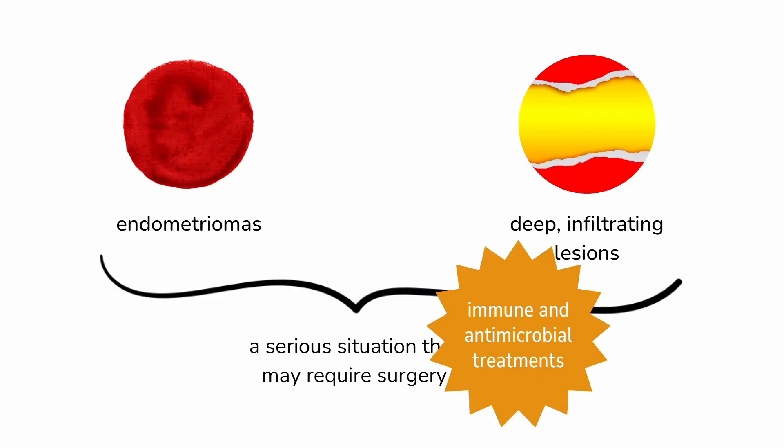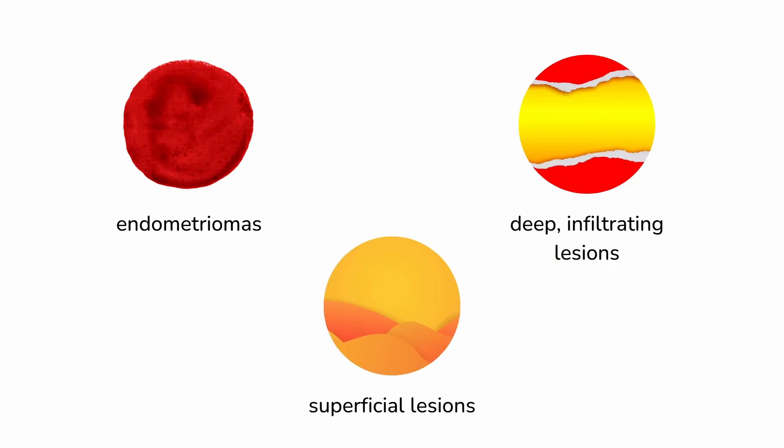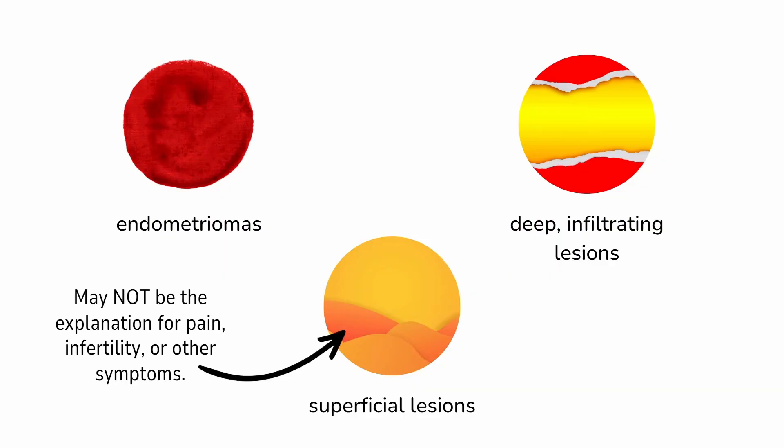First, though, we need to talk about superficial lesions and the unsettling possibility that for some women — possibly many women — the superficial type of endometriosis lesions may not be the explanation for pain, infertility, or other symptoms. Although, to be fair, there are different subtypes of superficial lesions, so some could explain symptoms while others do not.